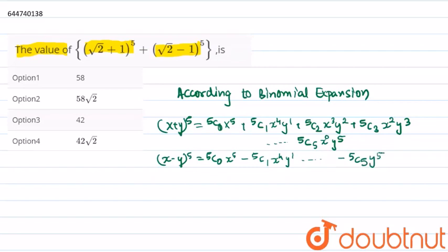Therefore, on adding both the terms, (x + y)^5 + (x - y)^5 equals twice [5C0 x^5 + 5C2 x^3 y^2 + 5C4 x y^4].